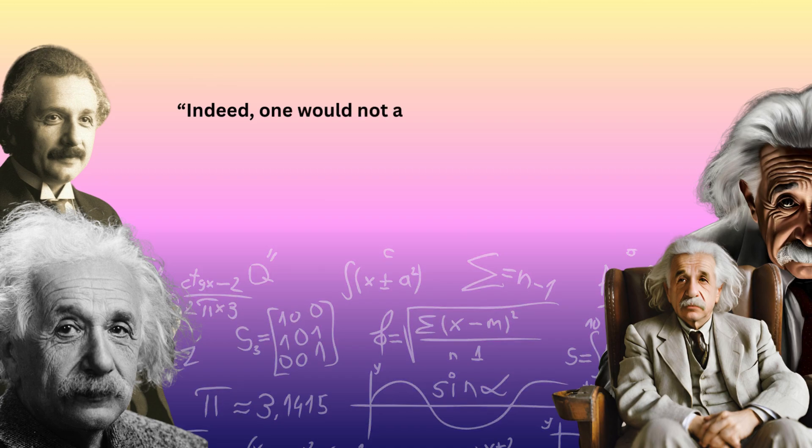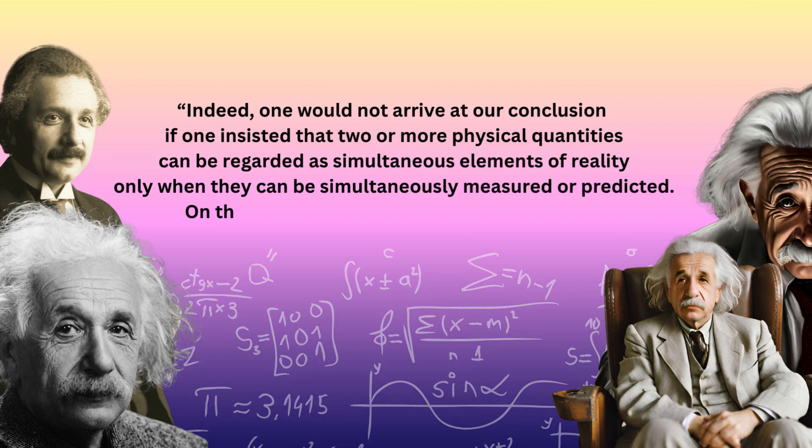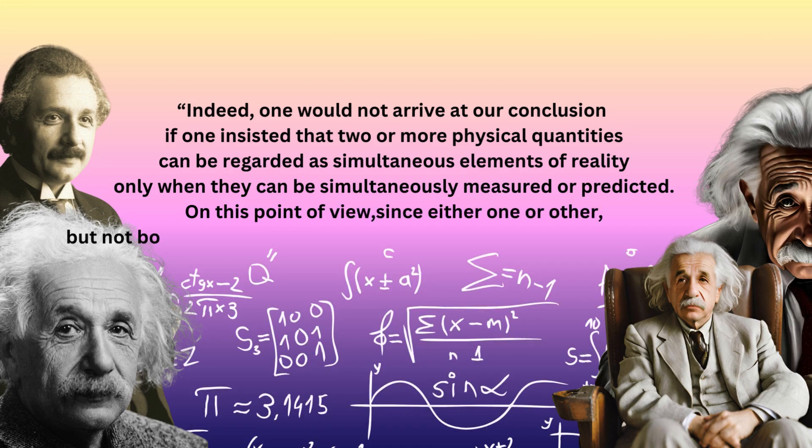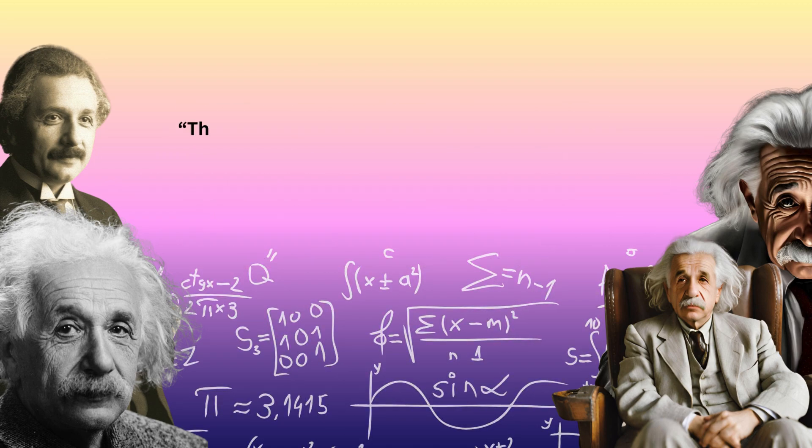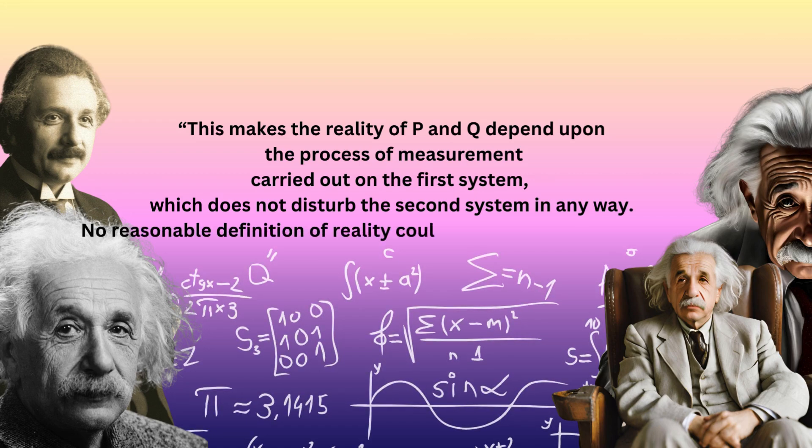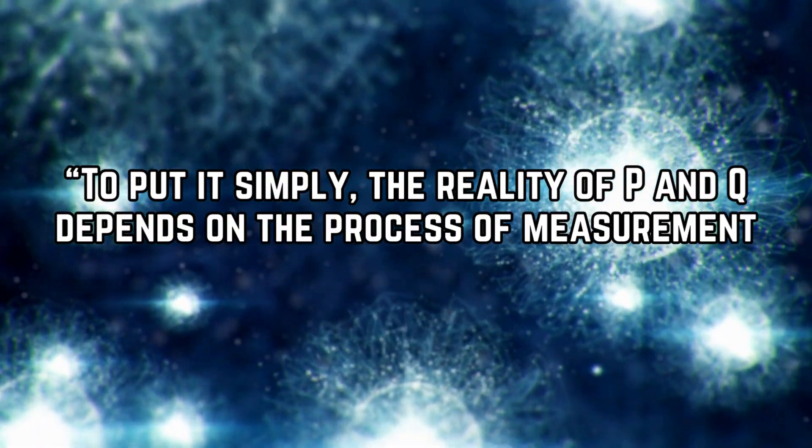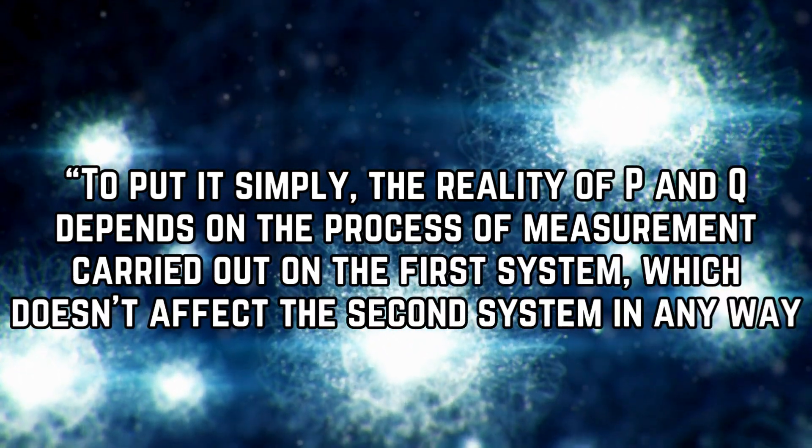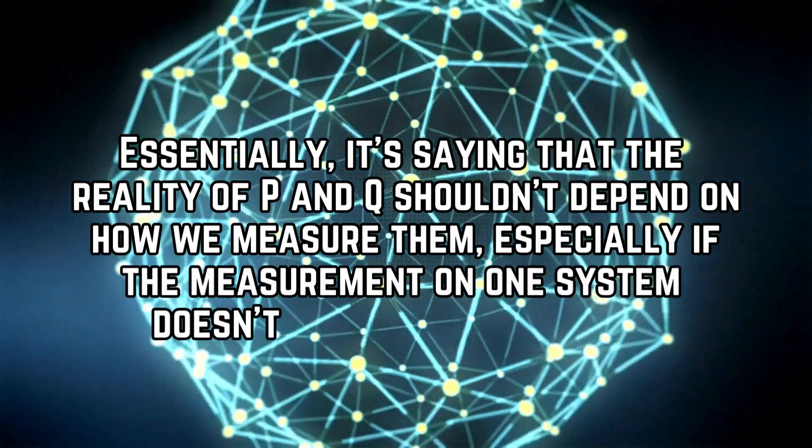Einstein said this: indeed, one would not arrive at our conclusion if one insisted that two or more physical quantities can be regarded as simultaneous elements of reality only when they can be simultaneously measured or predicted. On this point of view, since either one or other were not brought simultaneously of the quantities can be predicted, they are not simultaneously real. This makes the reality of principle when the process of measurement carried out on the first system, which does not disturb the second system in any way. To put it simply, the reality of P and Q depends on the process of measurement carried out on the first system, which doesn't affect the second system in any way. Essentially, it's saying that the reality of P and Q shouldn't depend on how we measure them, especially if the measurement on one system doesn't influence the other.